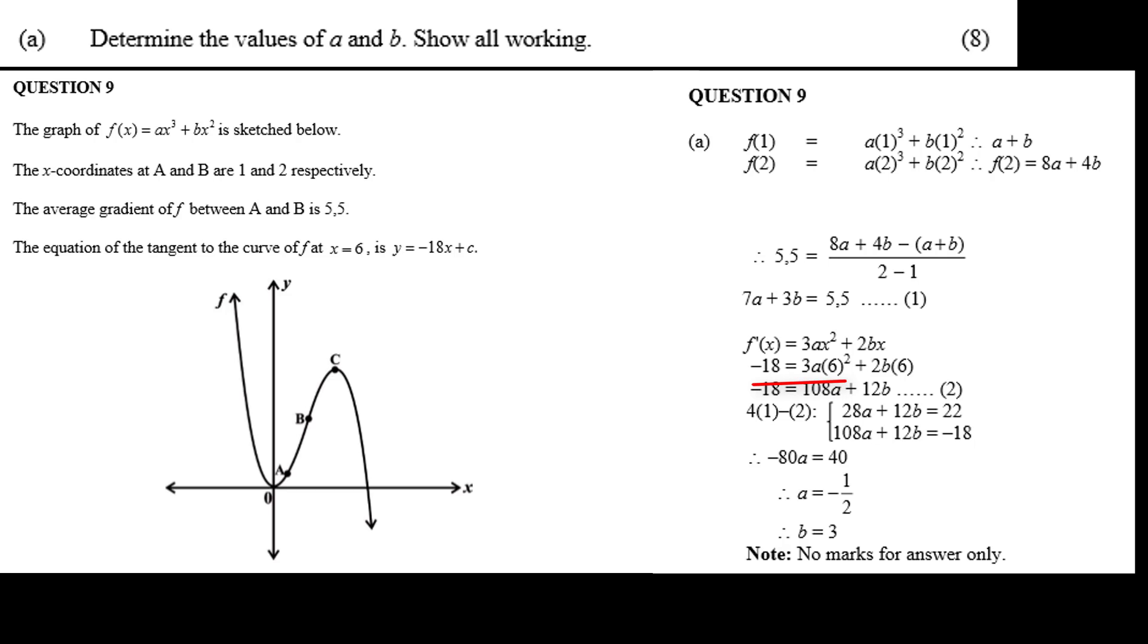Minus 18 equals 3a times 6 squared plus 2b times 6. Minus 18 equals 108a plus 12b. Call this equation 2. Now to solve for a and b.